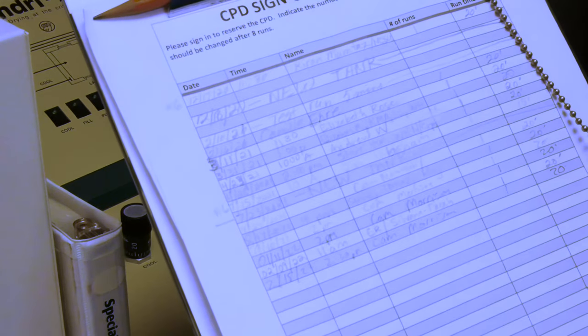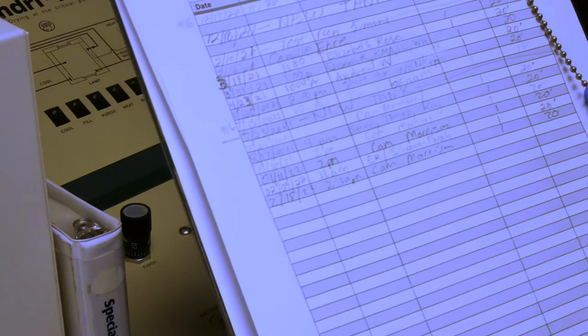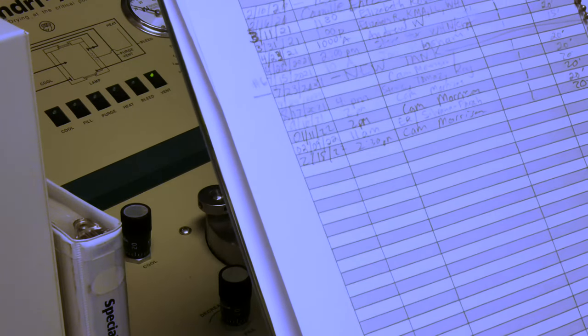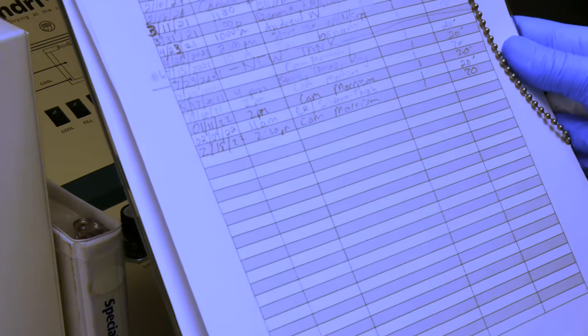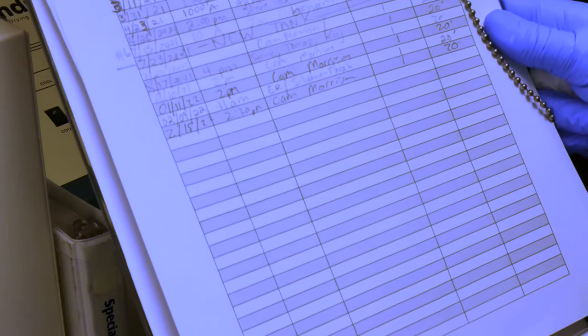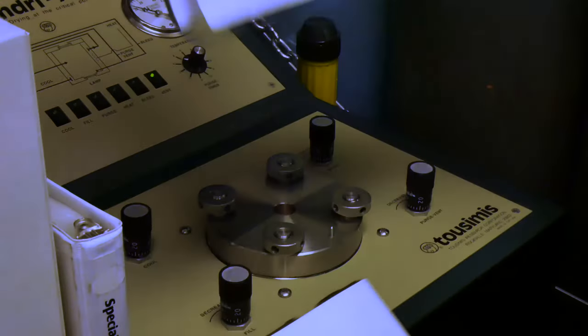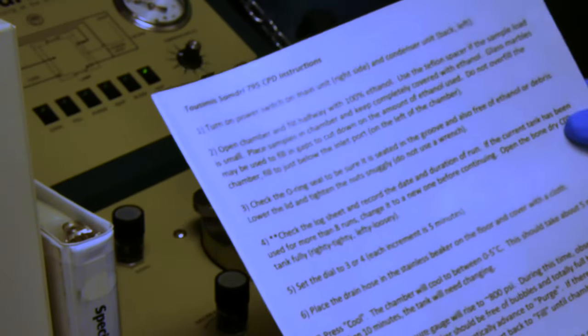And we are today on seven. Often we get seven, eight runs from a tank. It may be that today we will have to make a tank change in the middle of the run. Hopefully we can avoid that. But if so, we'll have it recorded. We will document on the log sheet once we have the run underway.